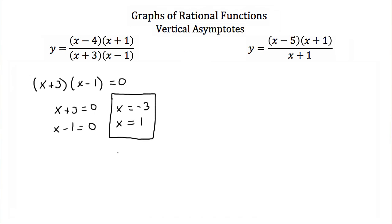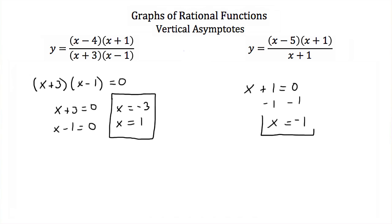Now for y = [(x - 5)(x + 1)] / (x + 1), we find the vertical asymptote by setting the denominator equal to zero: x + 1 = 0, so x = -1. The vertical asymptote for this rational function is x = -1.